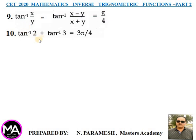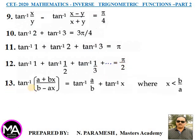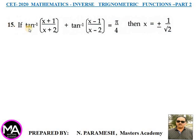Next: tan⁻¹(x/y) − tan⁻¹[(x−y)/(x+y)] = π/4. Tenth point: tan⁻¹2 + tan⁻¹3 = 3π/4. Eleventh point: tan⁻¹1 + tan⁻¹2 + tan⁻¹3 = π. Twelfth point: tan⁻¹1 + tan⁻¹(1/2) + tan⁻¹(1/3) + ... = π/2. Thirteenth point: tan⁻¹[(a+bx)/(b−ax)] = tan⁻¹(a/b) + tan⁻¹x, where x < b/a. Fourteenth point: Σ tan⁻¹[(a−b)/(1+ab)] = 0. Fifteenth point: if tan⁻¹[(x+1)/(x+2)] + tan⁻¹[(x−1)/(x−2)] = π/4, then x = ±1/√2.